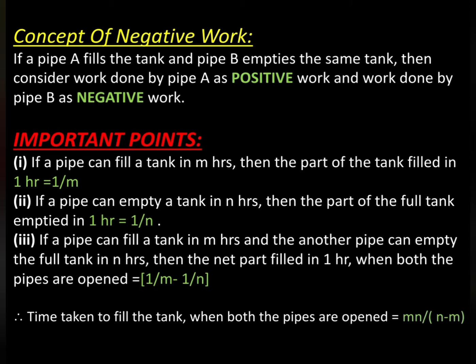Third one, if a pipe can fill a tank in m hours and another pipe can empty the full tank in n hours, then the net part filled in 1 hour when both the pipes are opened is 1 by m minus 1 by n. Time taken to fill the tank when both the pipes are opened equals to mn by n minus m.